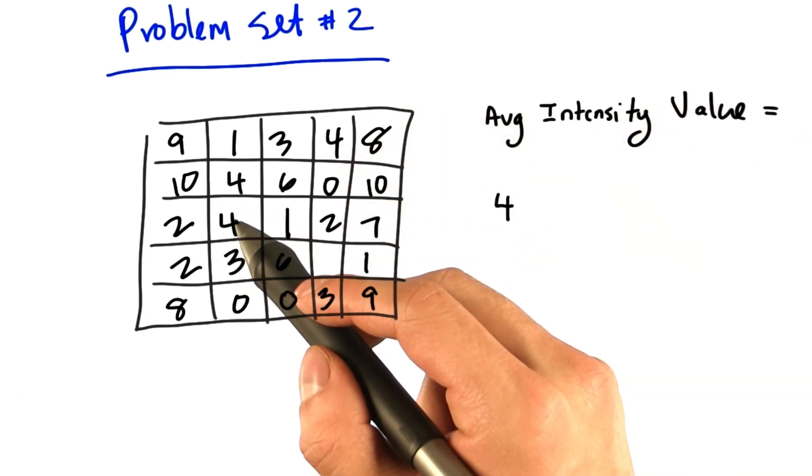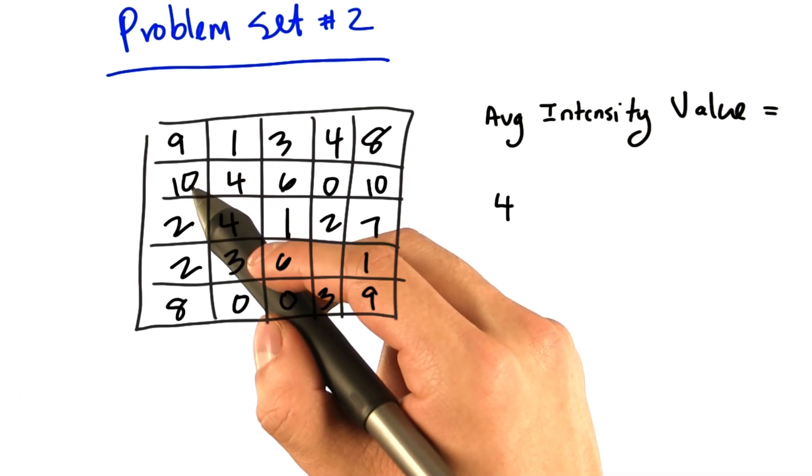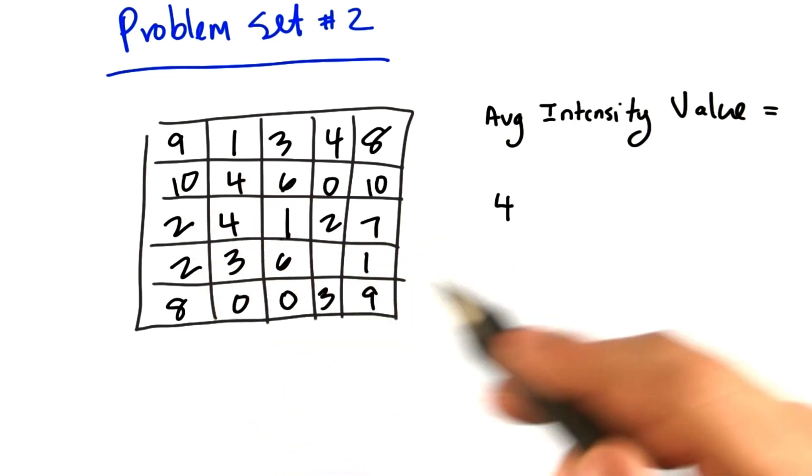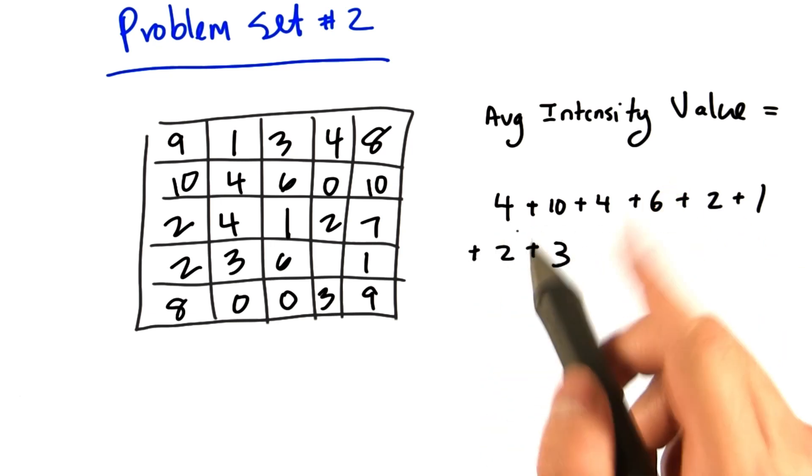and we will add this value to the value of all its neighbors. So 10, 4, 6, 2, 1, 2, 3, and 6. And once we add up all these values, we will take the average.